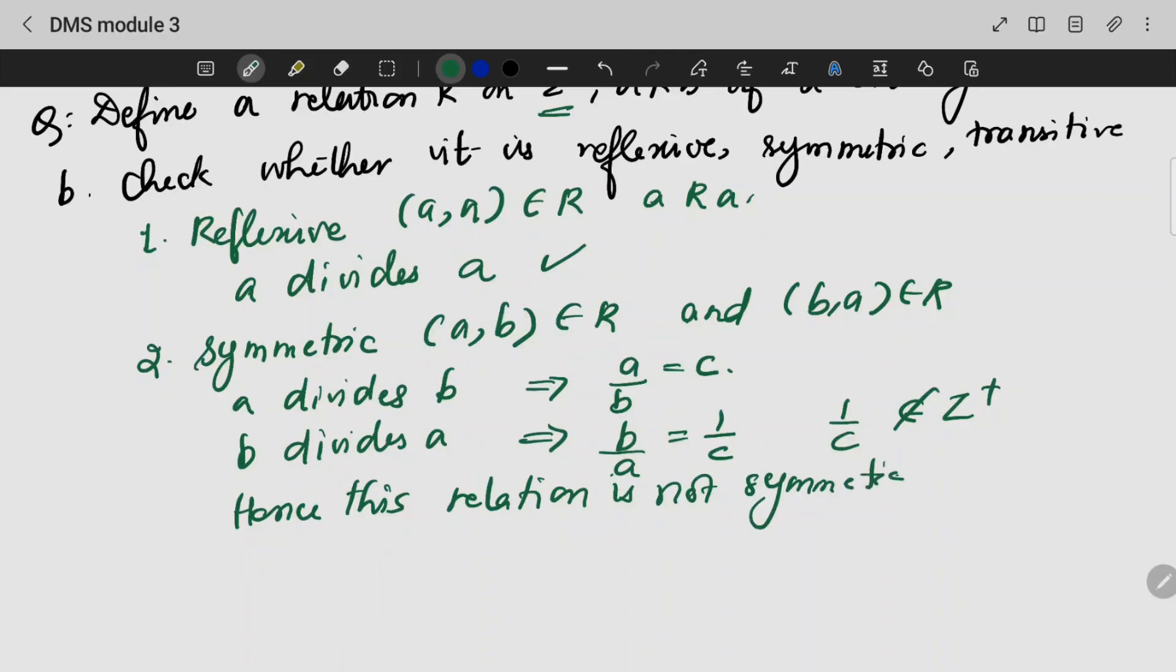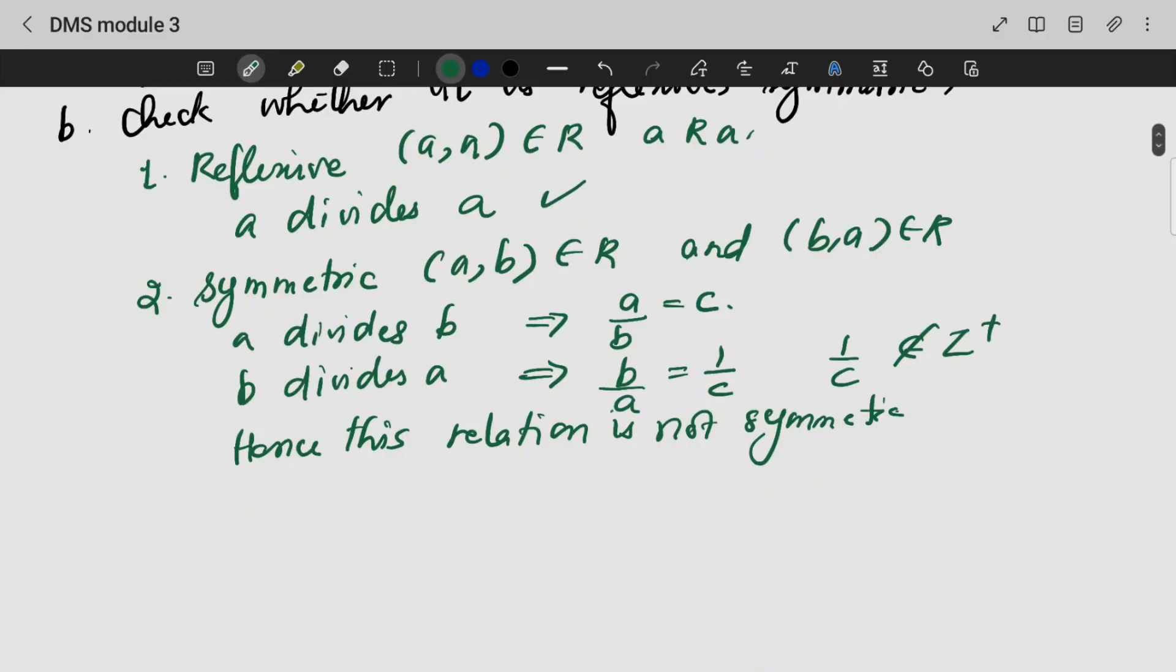For example, 4 divided by 2 is 2, but 2 divided by 4 is 1 by 2. That is not symmetric because it doesn't fall under Z plus.